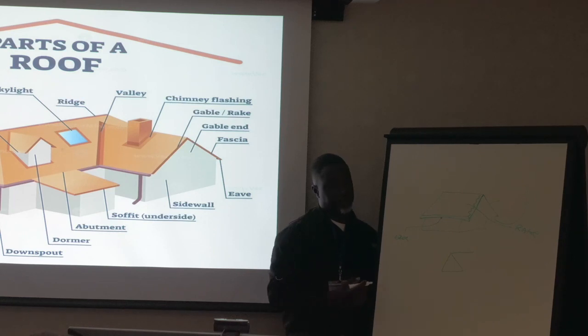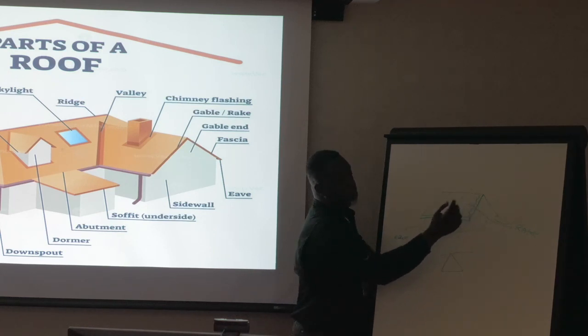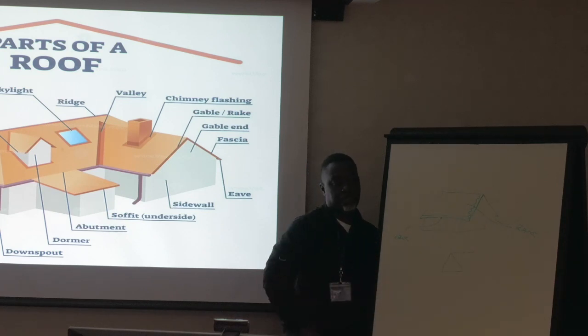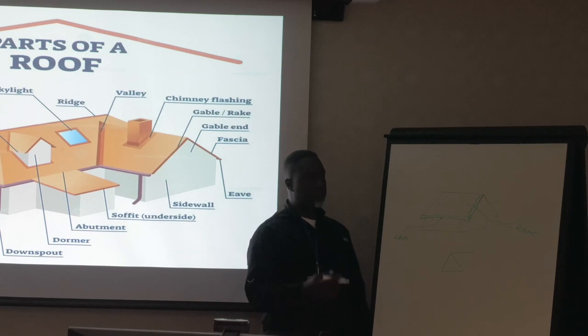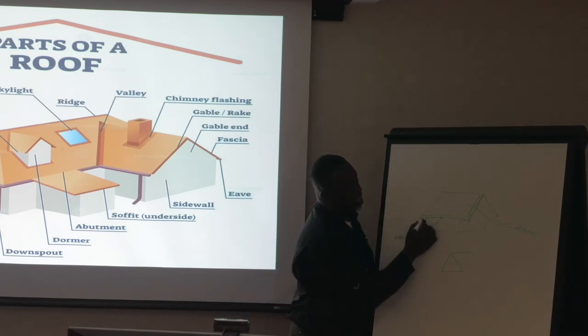So eave is vertical? Eave is horizontal. And the rake is vertical. It's vertical. Diagonal, really, because it's never, yeah. It's not really vertical, but we use the word vertical for all intents and purposes. So this is considered the eave, and this is considered the rake.